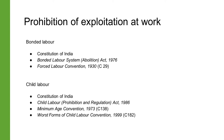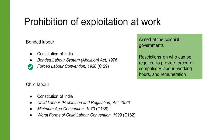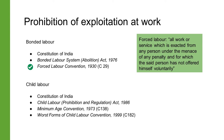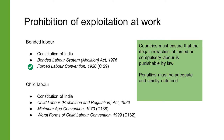The Forced Labor Convention of 1930, which is Convention 29 of the ILO, was aimed at colonial governments and placed restrictions on who can be required to provide forced or compulsory labor, working hours and remuneration. It defines forced labor as all work or service exacted from any person under the menace of any penalty and for which the person has not offered himself voluntarily. Ratifying countries must ensure that the illegal extraction of forced or compulsory labor is punishable by law and that penalties are adequate and strictly enforced. They are also required to report annually on measures taken to give effect to the convention.